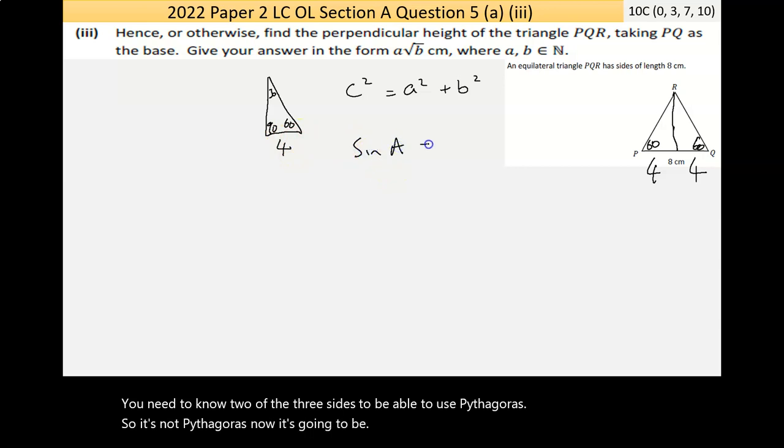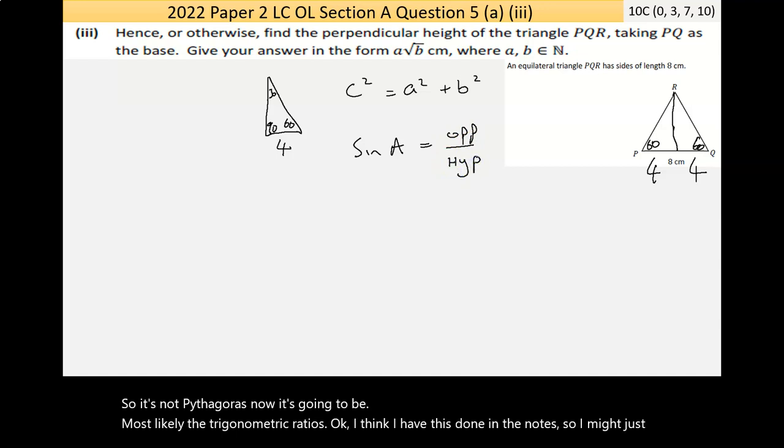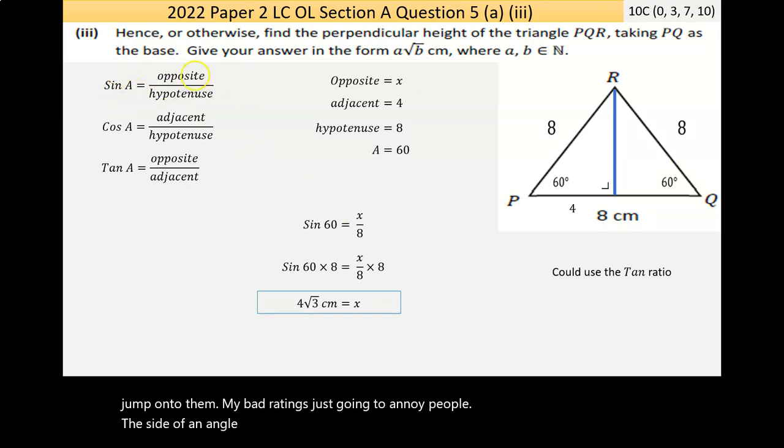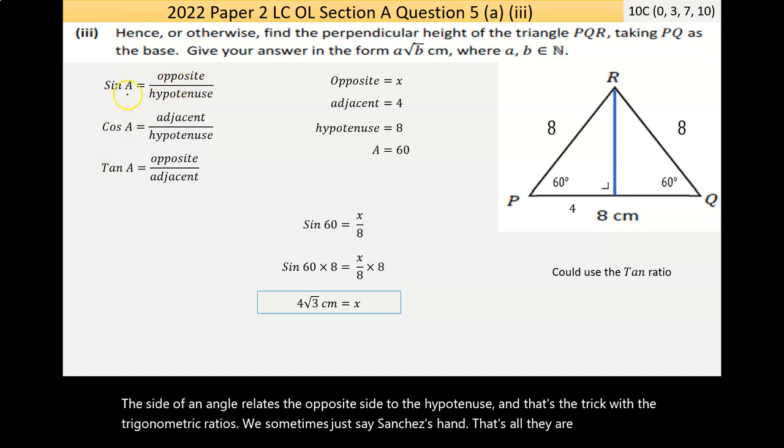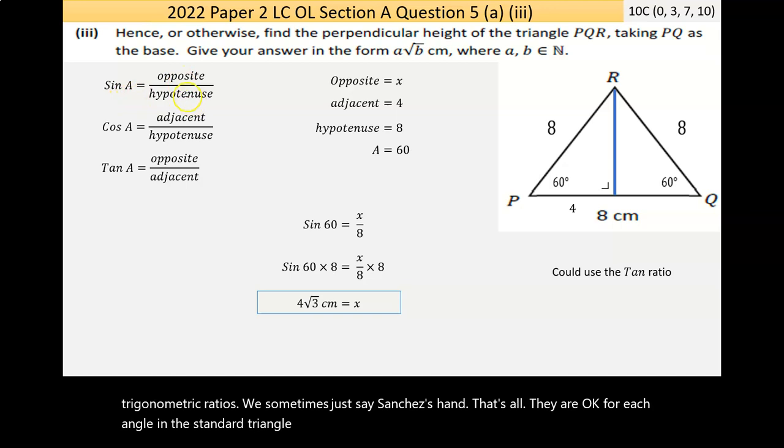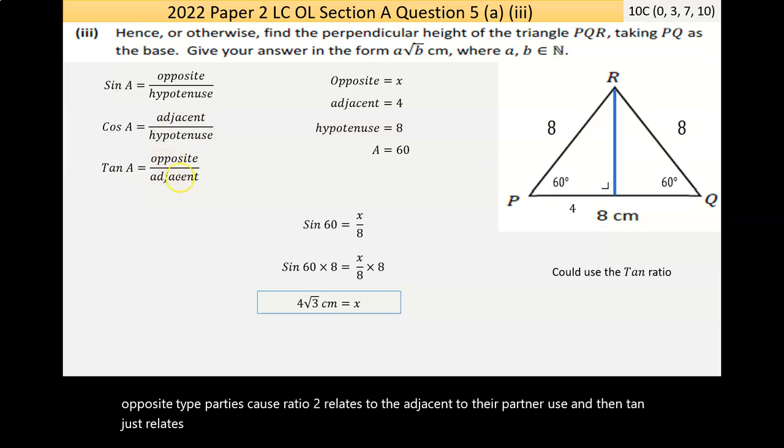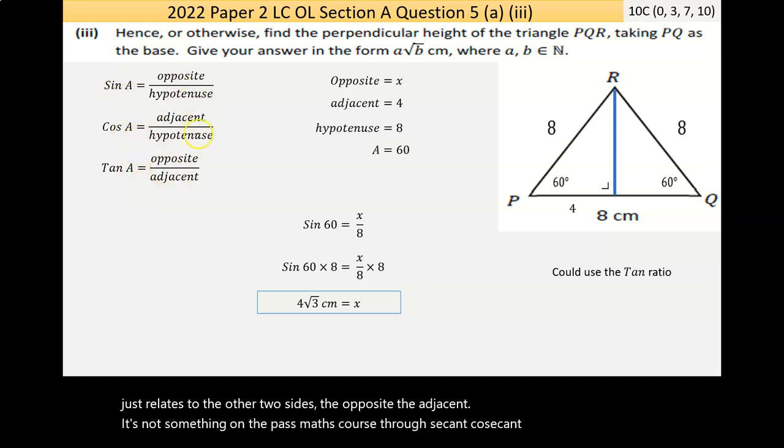I think I have this done in the notes, so I might just jump onto them. My bad writing is just going to annoy people. The sine of an angle relates the opposite side to the hypotenuse. And that's the trick with the trigonometric ratios. We sometimes just say sine, cos, tan. That's all they are. For each angle in the standard triangle, we're relating the sides. Sine is, I call it ratio 1, relates the opposite to the hypotenuse. Cos, ratio 2, relates the adjacent to the hypotenuse. And then tan just relates to the other two sides, the opposite to the adjacent.